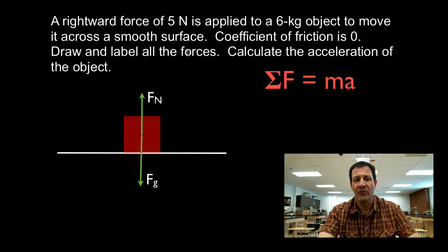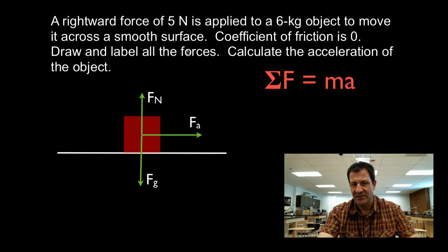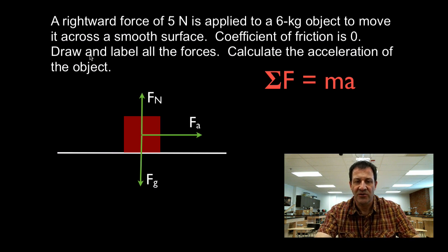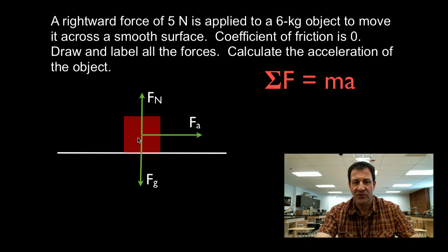It says there's a rightward force, so we're going to draw in the rightward force. We label that as our applied force, and those are the three forces we're going to have in this case. There's no friction, so there's no force opposite the applied force — that would be friction if there were friction, but there is none. So there are only three forces.